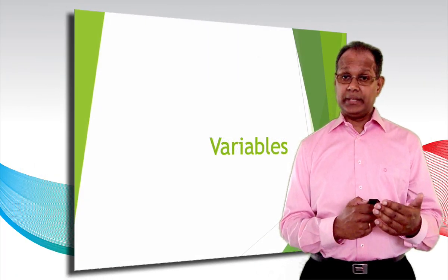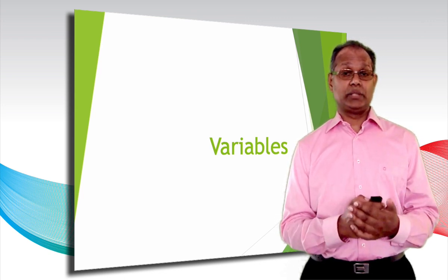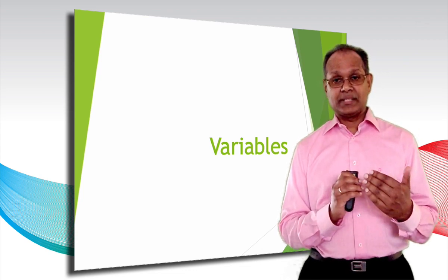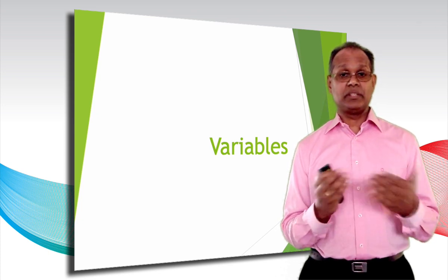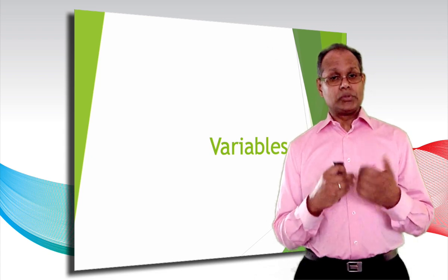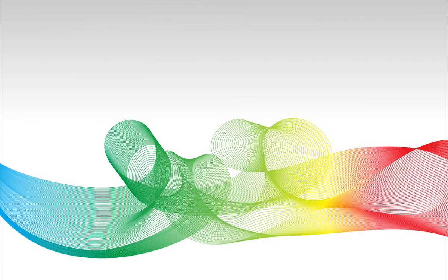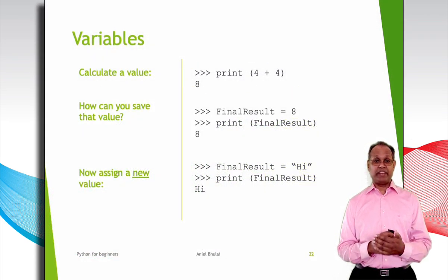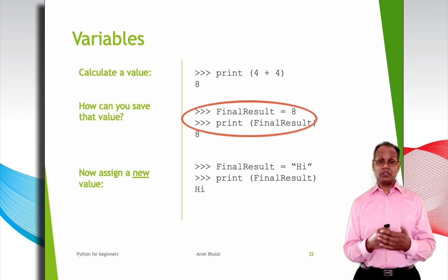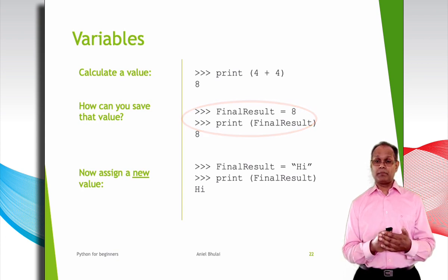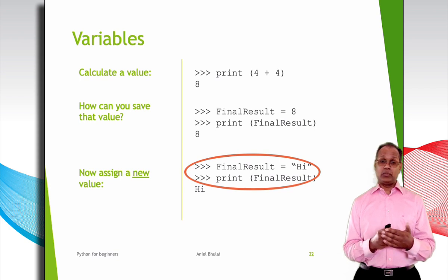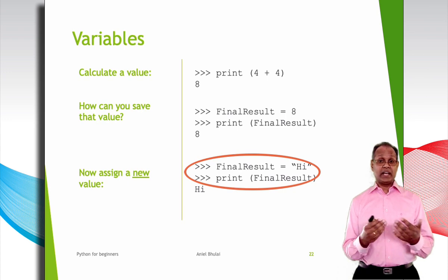In simple terms, we could say that a variable is just a box that you can use to put things into. To distinguish the different boxes — these are the variables — we label them. This means every variable has a name which describes what the variable is storing. We can view the content of the box and we can change the content just by calling the box label. In the first example, we calculate a value. In the second example, we store the calculated value by creating a variable called final_result and assigning the value to it. In the last example, we see that we can change the value in a variable — we changed the value 8 of the variable final_result to 'hi', so the last output will be 'hi'.